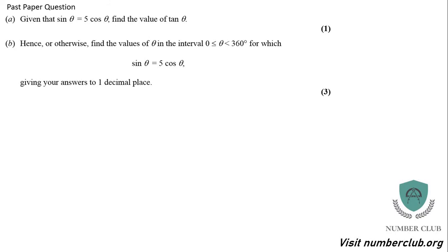Here's a genuine past paper question from a few years ago — before the new spec of the A-level. I'd suggest pausing the video, give it a crack, and then we'll go through it. We've got sin of theta equals 5 cos of theta, which means sin of theta over cos of theta equals 5, which means tan theta equals 5. There's one mark. Whenever a question asks you hence or otherwise, try to use the hence if possible.